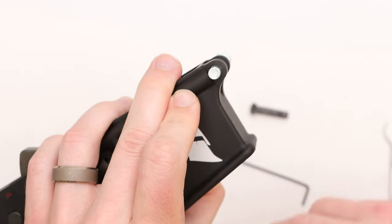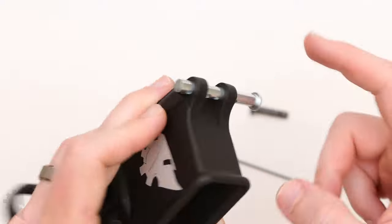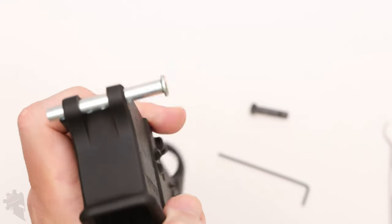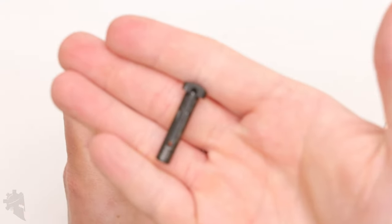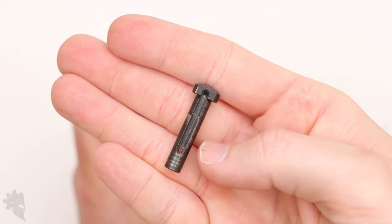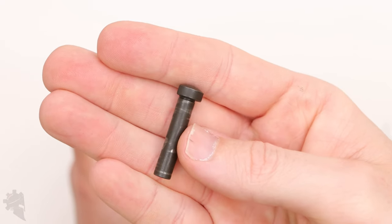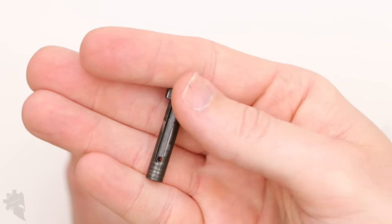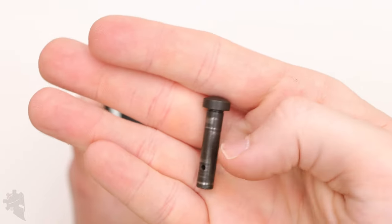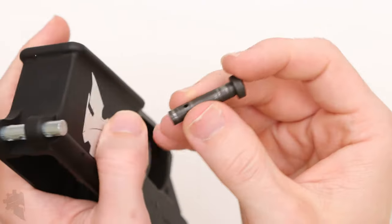Don't need that anymore. So now the spring and the detent are being captured by the clevis pin. Now all I have to do is take the front takedown pin here. You can tell the difference between the front and the rear because the front is physically longer and it also has a flat portion here on the back that interacts with the flat portion of the receiver.